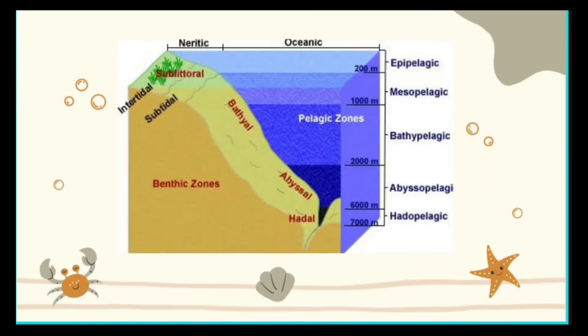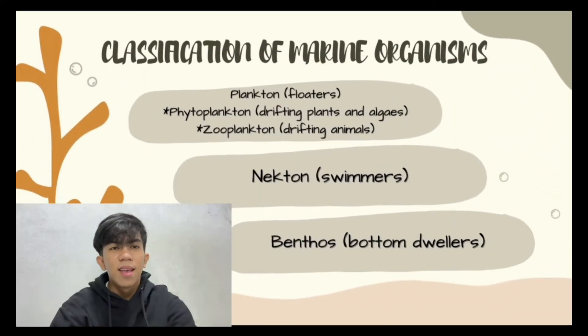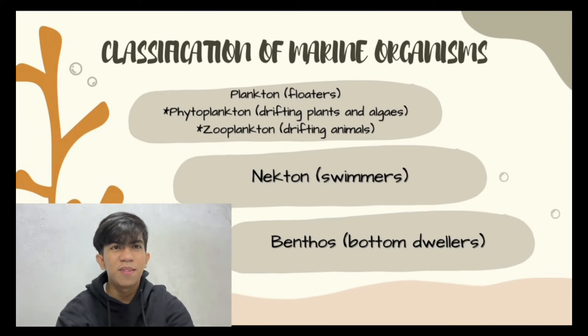In this illustration, you can see the benthic zone on the left side of the picture, while on the right side you will notice the pelagic zone. Living things in the oceans are called marine organisms. They range from tiny bacteria to the largest known animal, which is the blue whale.